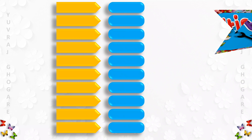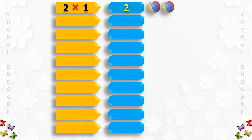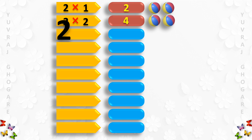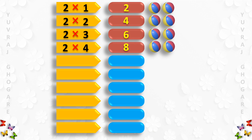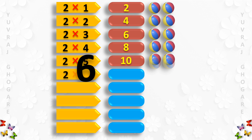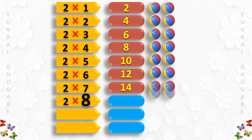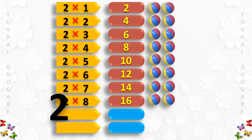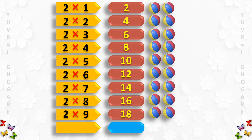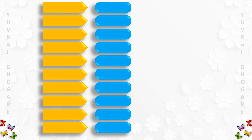Table of 2: 2 1s are 2, 2 2s are 4, 2 3s are 6, 2 4s are 8, 2 5s are 10, 2 6s are 12, 2 7s are 14, 2 8s are 16, 2 9s are 18, 2 10s are 20.